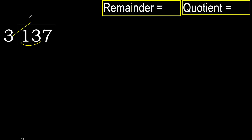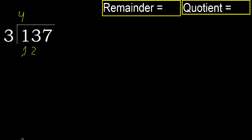3 multiplied by which number is nearest to 13 but not greater? 3 multiplied by 5 is 15 — 15 is greater. Multiply by 4: 12 is not greater. 13 minus 12 equals 1.